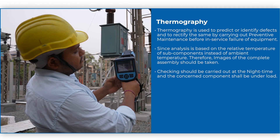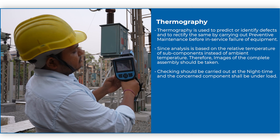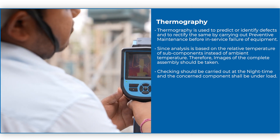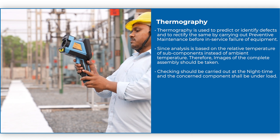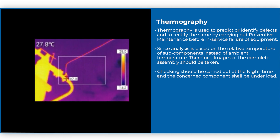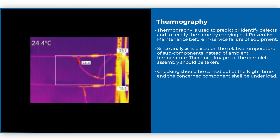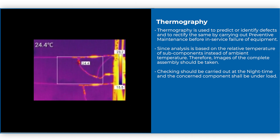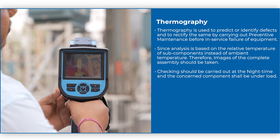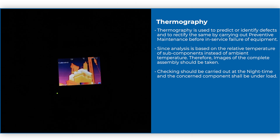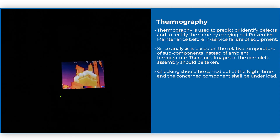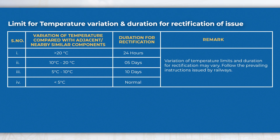Thermography: Thermography is used to predict or identify defects and to rectify them by carrying out preventive maintenance before in-service failure of equipment. Since analysis is based on the relative temperature of subcomponents instead of ambient temperature, images of the complete assembly should be taken. Checking should be carried out at night time and the concerned component shall be under load. The limit for temperature variation and duration for rectification of issue is given in the table.